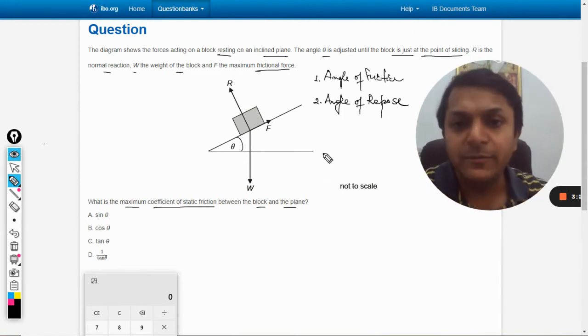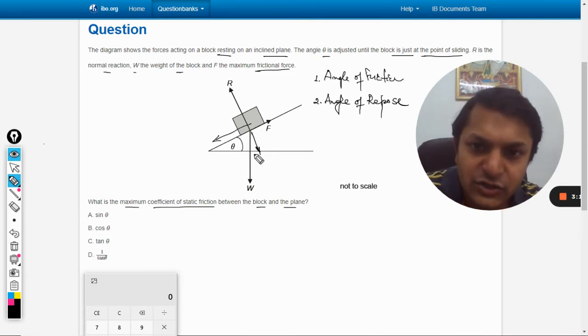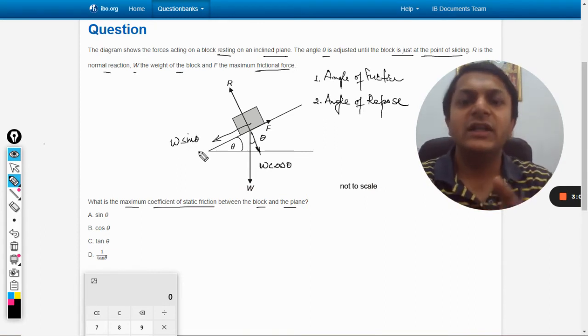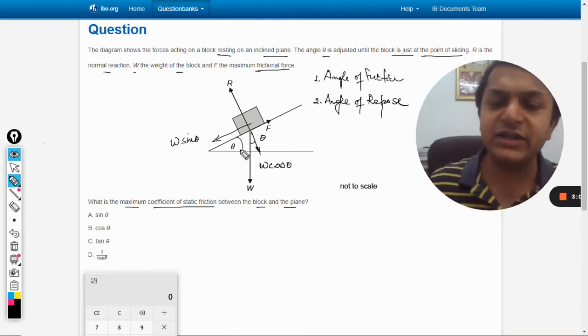This is the weight W and this is theta. What we can do is break this weight into two components. This theta will be equal to this theta, so this will be W cos theta as the first component and W sin theta will be the component that will try to move the body.